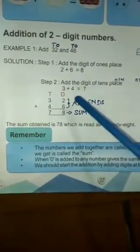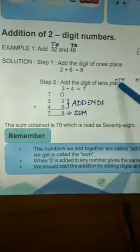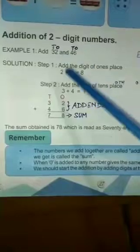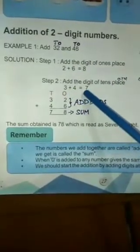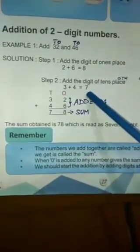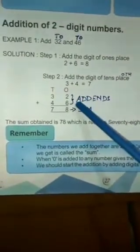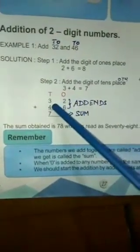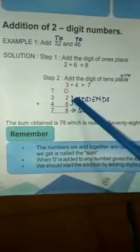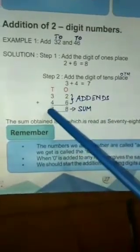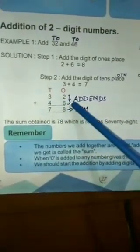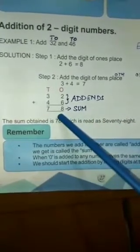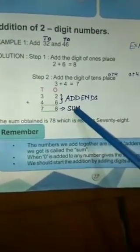Next step, add the digit of 10's place. Which are in 10's place? This 4 and this 3. So, 3 plus 4 is equal to 7. If you arrange orderly, 32 plus 46 — these are addends. 78 is the sum obtained.